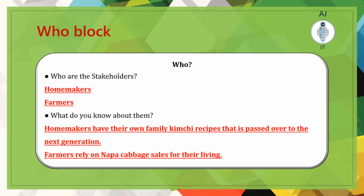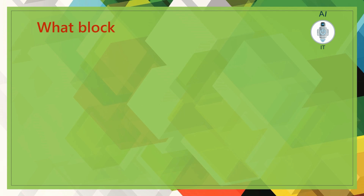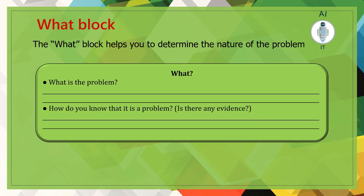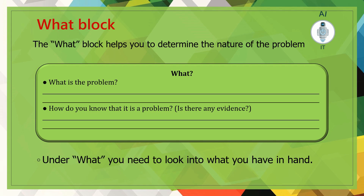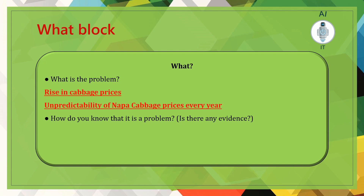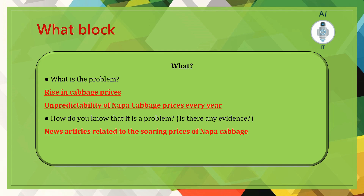We are assuming our stakeholders are homemakers, since they are in the majority. The second block is the 'what' block, which helps determine the nature of the problem. What is the problem, and how do you know it is a problem? Under this block, you have to gather evidence to prove that the problem actually exists — it could be newspaper articles, media announcements, and so on. In our example, the problem is the rise in unpredictable cabbage prices, and we found evidence through a news article about the soaring prices of napa cabbage.